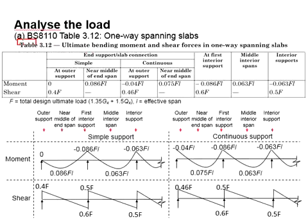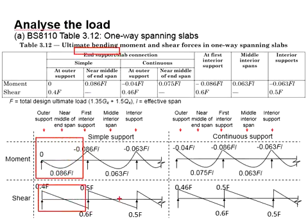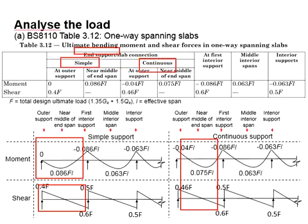Table 3.12 is meant for the one-way spanning slab and is mainly used for a continuous slab. The end span, which means the last span, can be in the mode of simply supported or continuous.